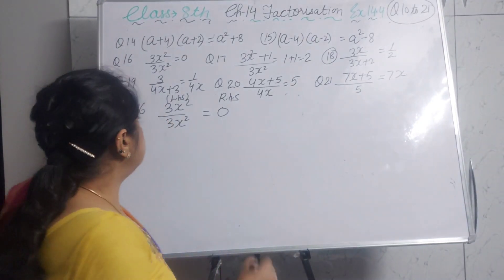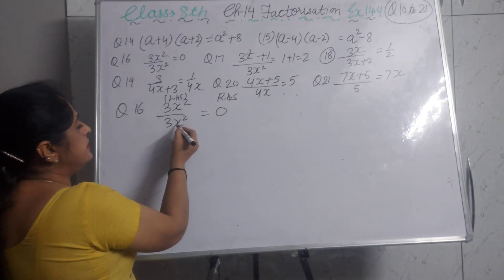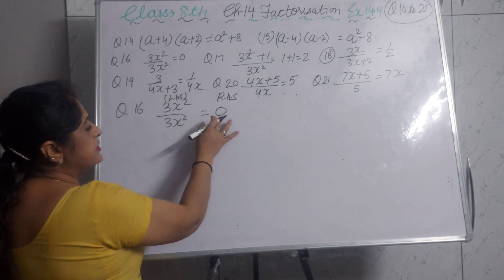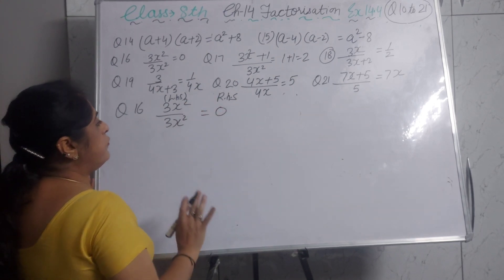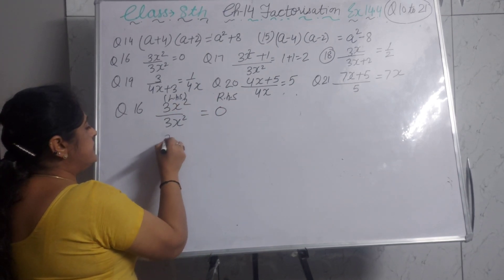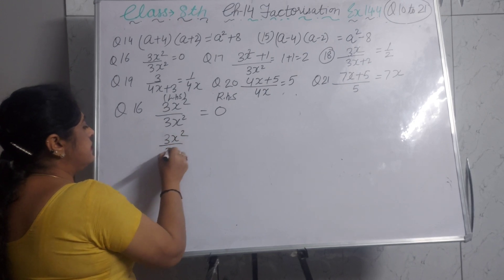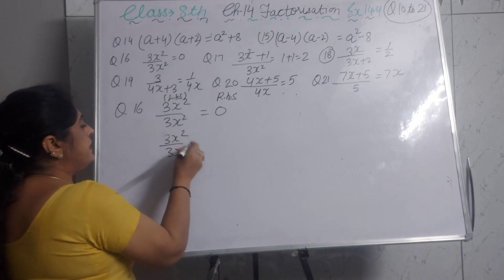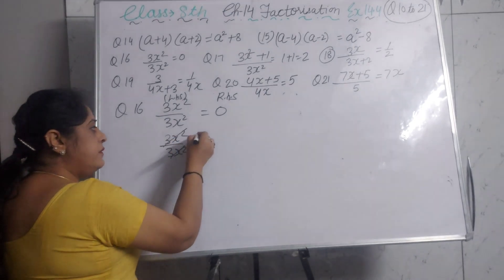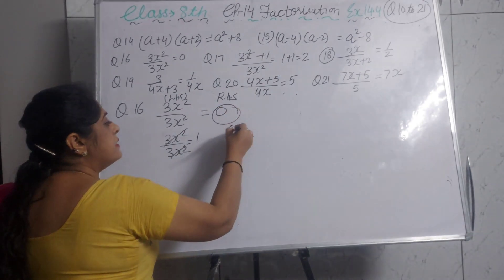Question 16: 3x² divided by 3x² is given as 0. We solve the left hand side: 3x² ÷ 3x² = 1, since any non-zero number divided by itself is 1. So the error is writing 0 instead of 1.